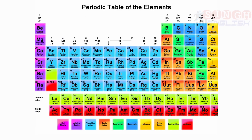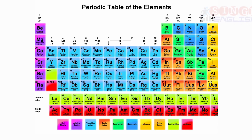There are about 117 different elements known to us. Out of these, 92 elements occur naturally on the earth. The others have been made by scientists in laboratories.